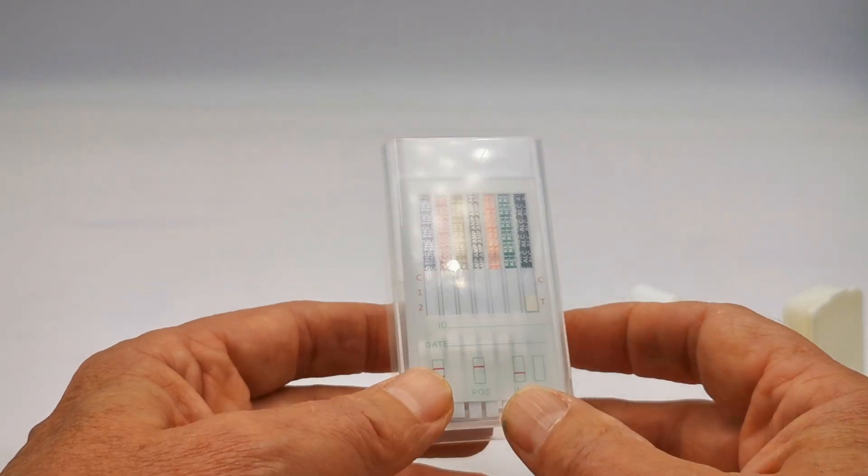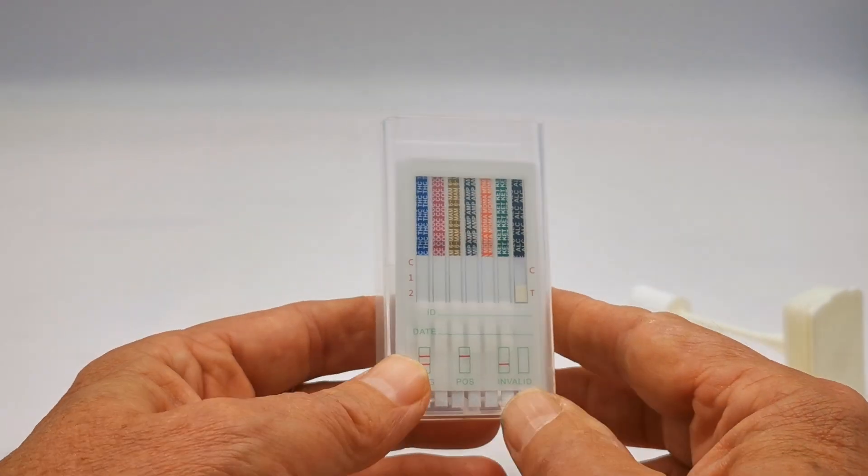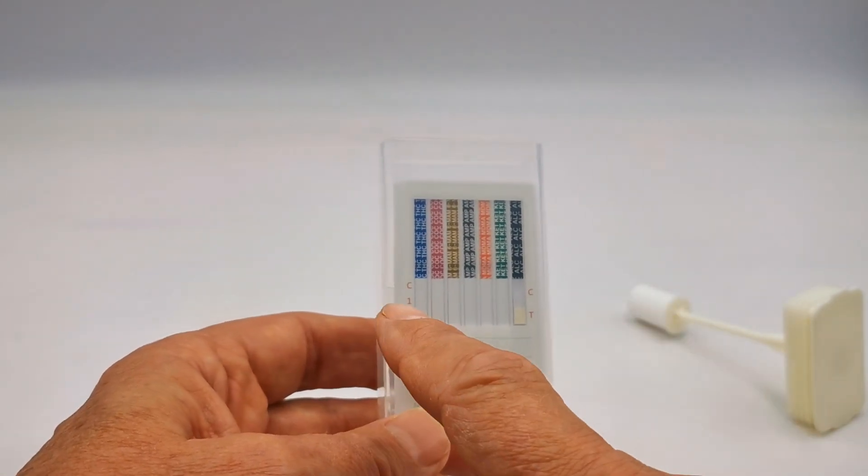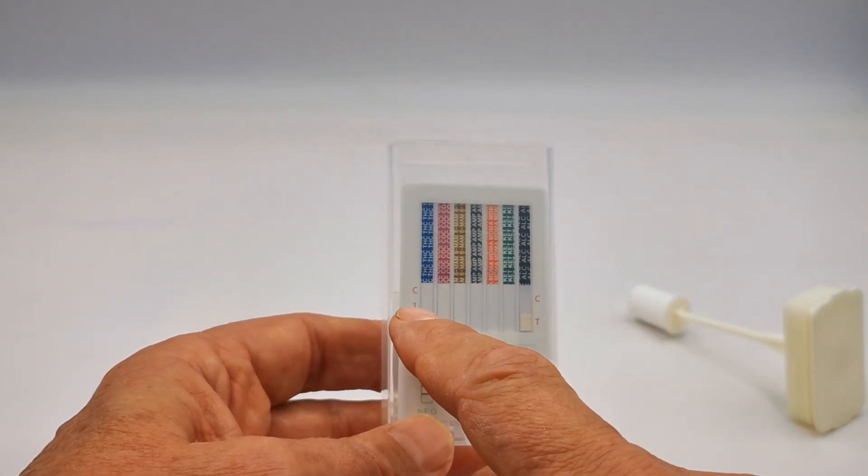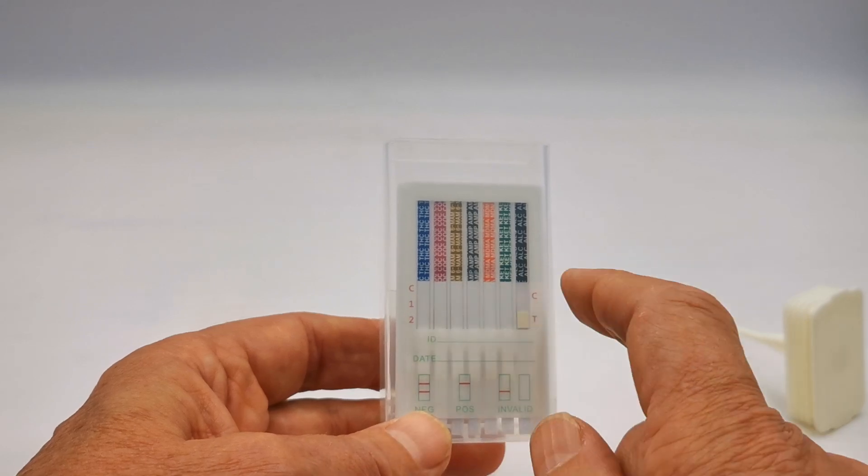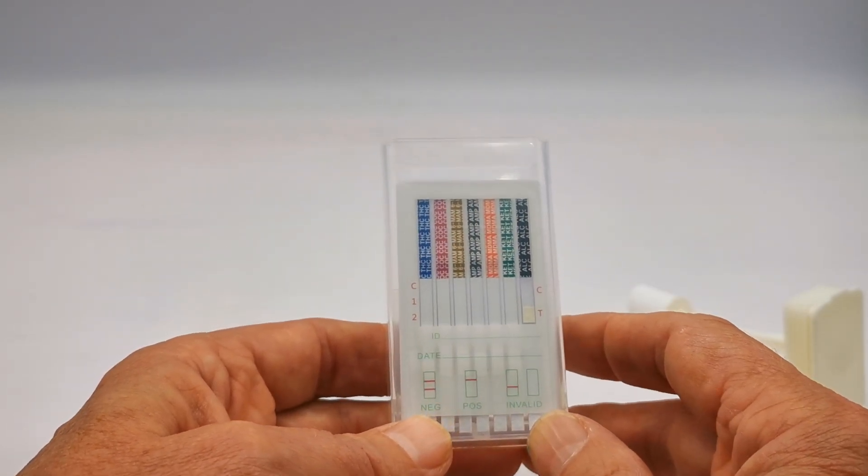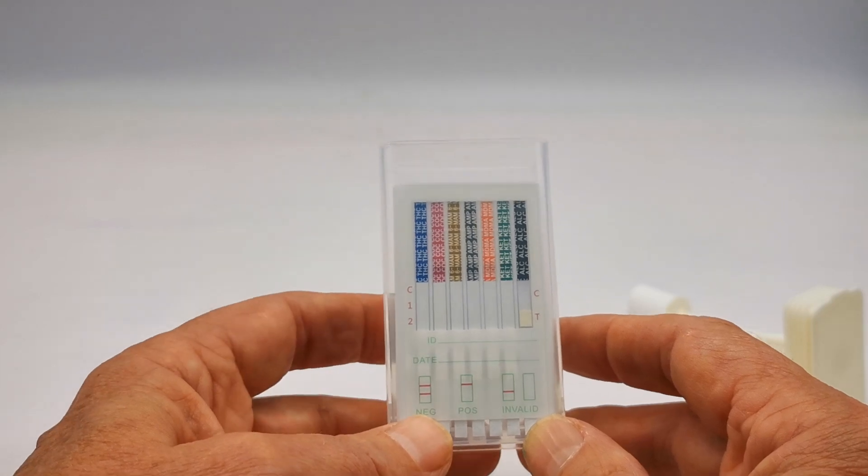This is the test cube ready to go. You get it out of the foil just before you're ready to do the test. You'll see marked on the front are indicative areas for the control lines and one and two where you may have a combination of control lines and test lines.